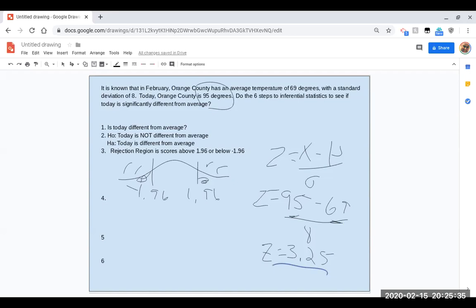So now we want to put that in our picture. So here we have 1.96. This is the line for 1.96. So where would 3.25 go? It's probably going to be over here. And so this line here, that is our Z-score for today's temperature. And you can see that's in the rejection region.